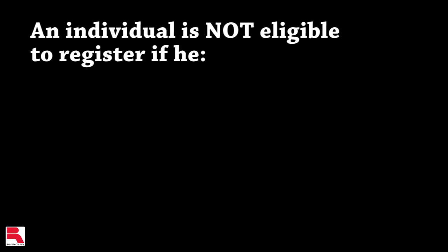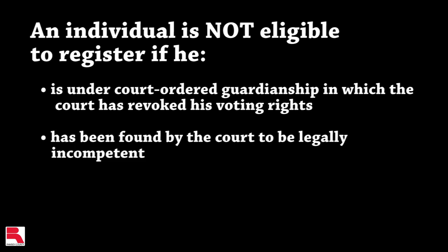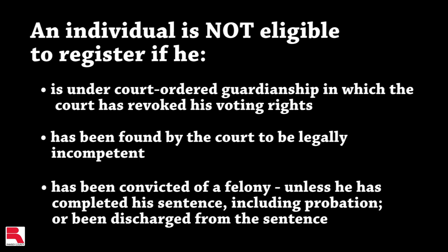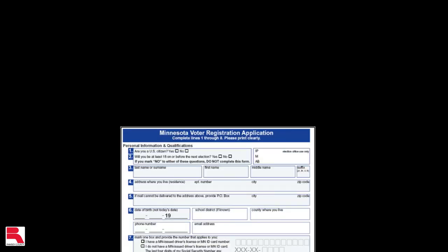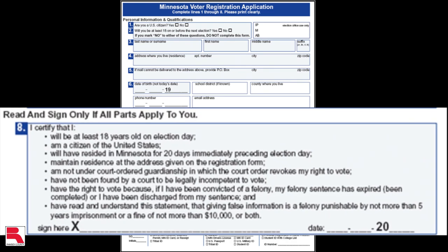An individual is not eligible to register if he is under court-ordered guardianship in which the court has revoked his voting rights, has been found by the court to be legally incompetent, has been convicted of a felony unless he has fully completed the sentence including probation, or has been discharged from the sentence. By completing and signing the voter registration application, a voter is attesting to the fact that he meets the eligibility requirements which are listed on the application.